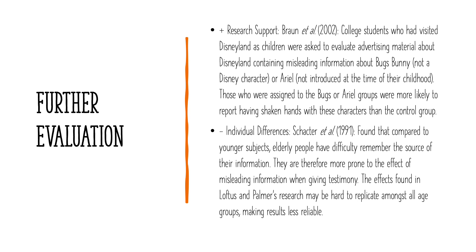A negative is that results may be affected by individual differences. Shakta et al. found that compared to younger subjects, elderly people have difficulty remembering the source of information — they know something but aren't sure how they know it — and are therefore more prone to the effects of misleading information when giving testimony, more likely to be affected by leading questions or conversations about an event. The effects found in Loftus and Palmer's research may be hard to replicate across all age groups, making results less reliable. Remember, reliability is about replicability — if you can't replicate the results, the study is not very reliable.